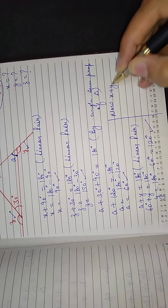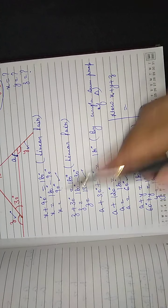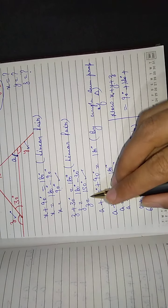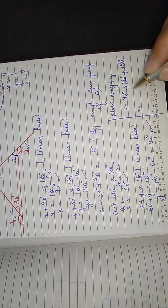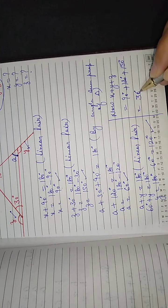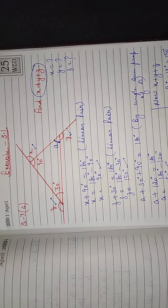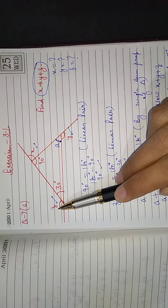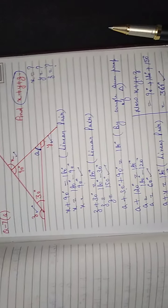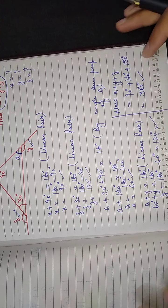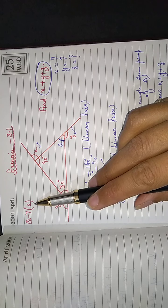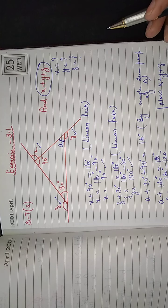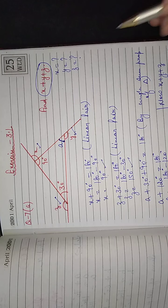x plus y plus z equals 90 plus 120 plus 150, which equals 360 degrees. In these types of questions, whenever we have to calculate the sum of all exterior angles of a triangle, it will always be 360 degrees. You can check in part (b) as well — the answer will also be 360 degrees. I hope this question is clear to everyone. If any doubt, you are always welcome. Thank you so much.